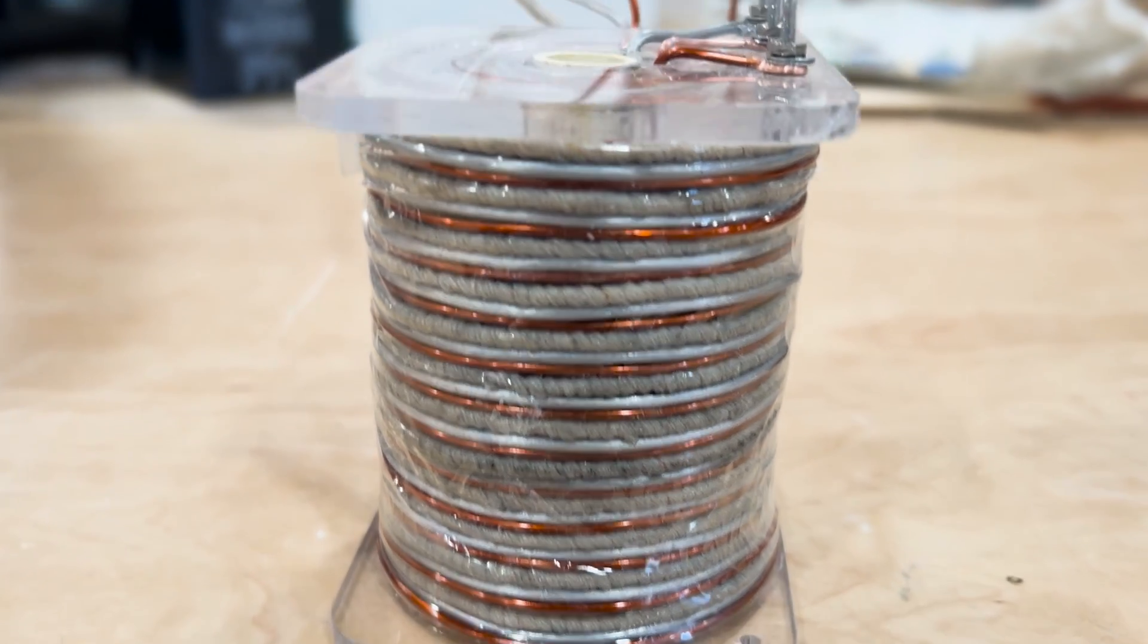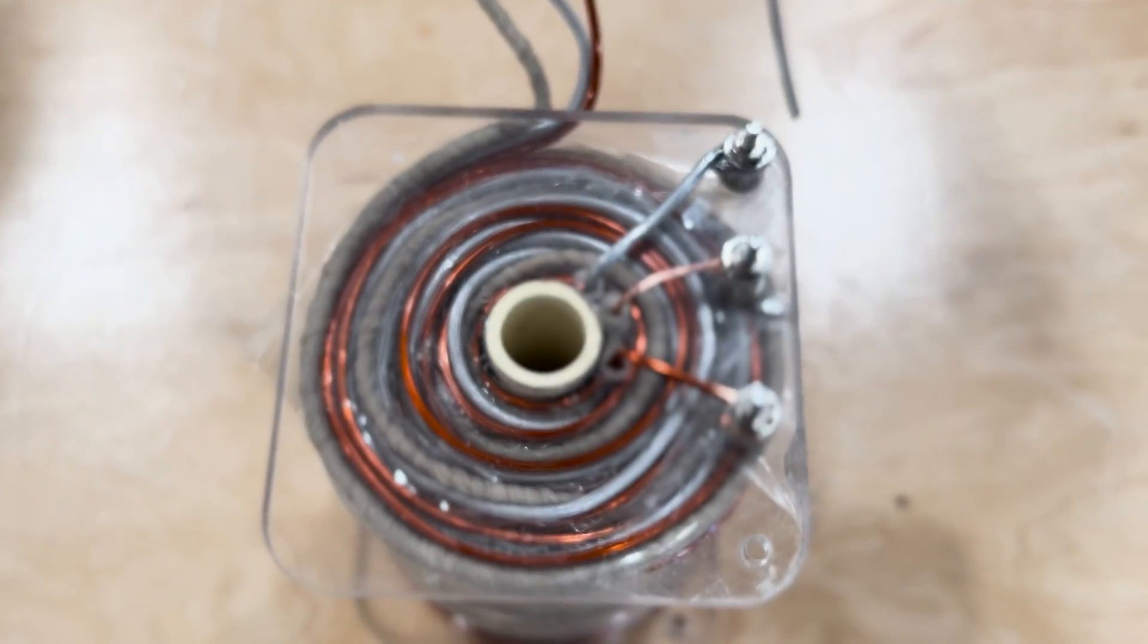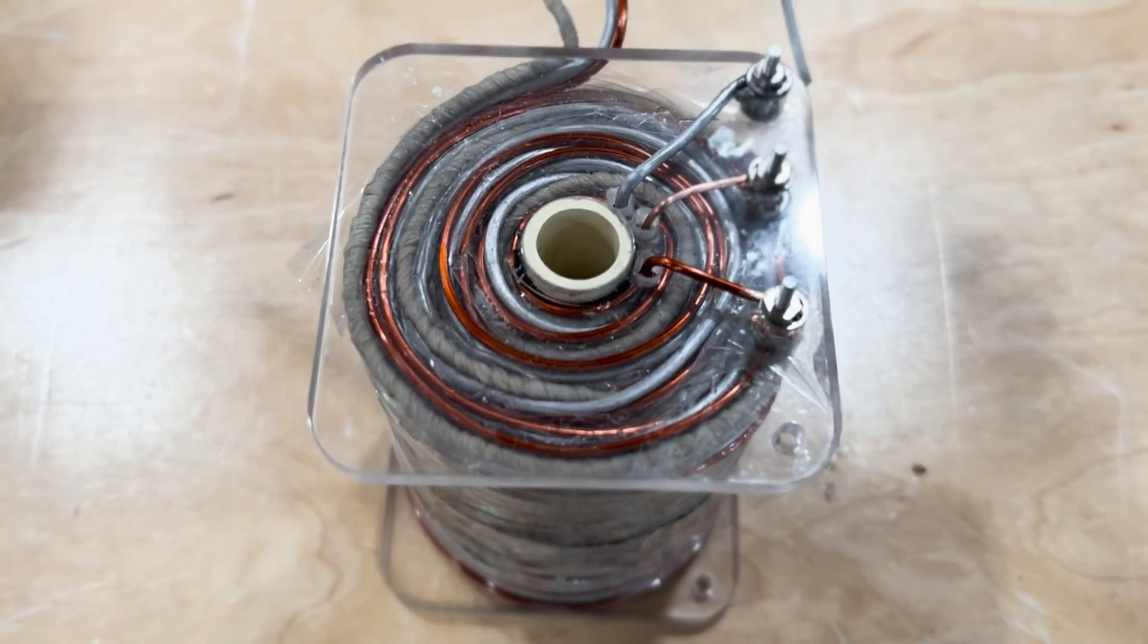The coil does not behave the same as an ordinary coil. There's a voltage potential between the aluminum and cotton covered wire, which can power a load, but that does not produce an electromagnet in the coil itself.